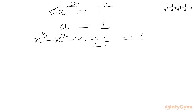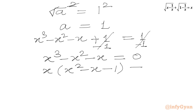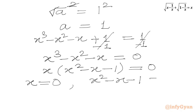Now we will subtract 1 from both sides. So plus and minus 1 will be cancelled from both sides and we write x³ − x² − x = 0. Now we will take x common, so in the bracket we have x² − x − 1 = 0. Using the zero product rule, we can write either x = 0 or x² − x − 1 = 0.